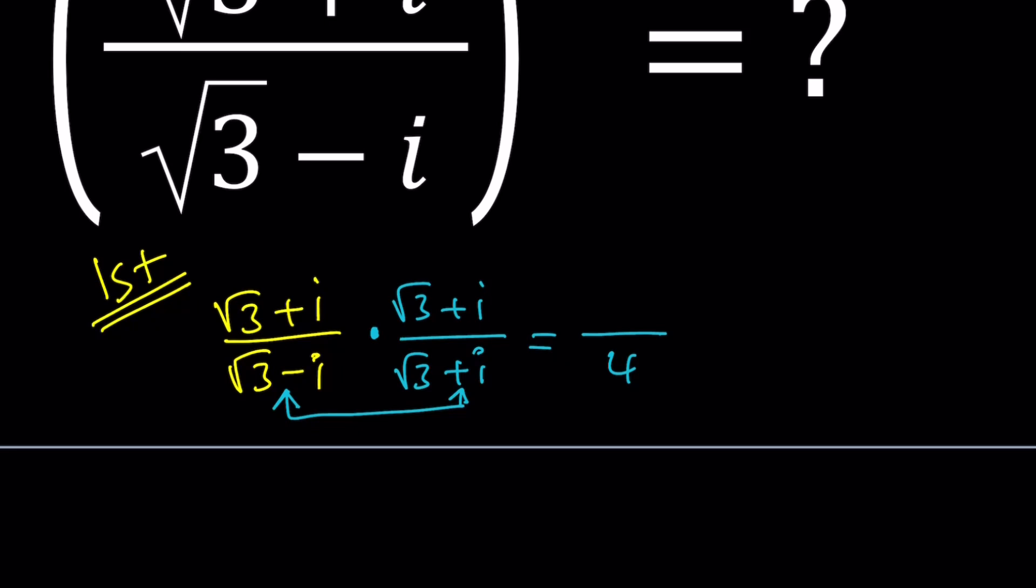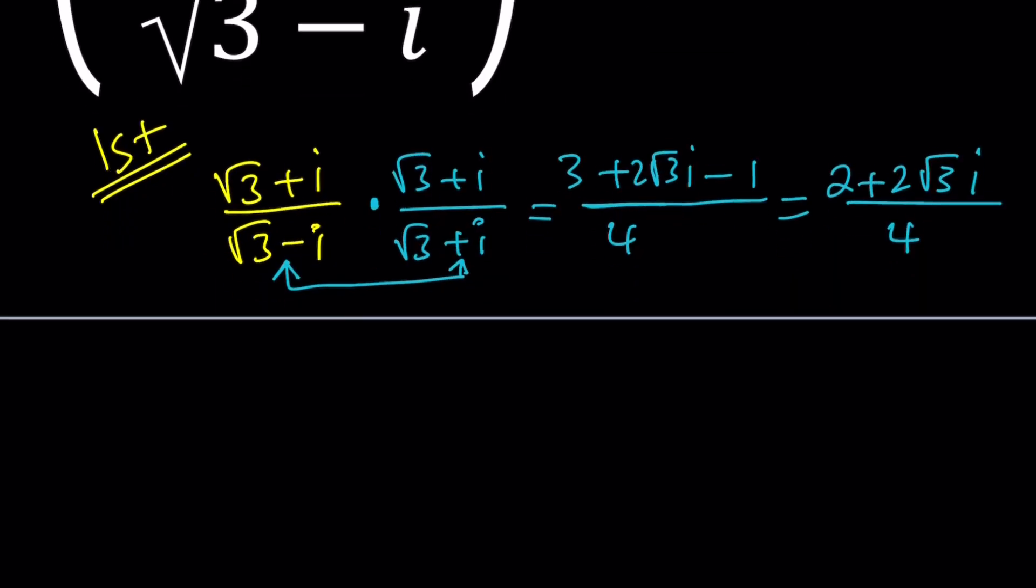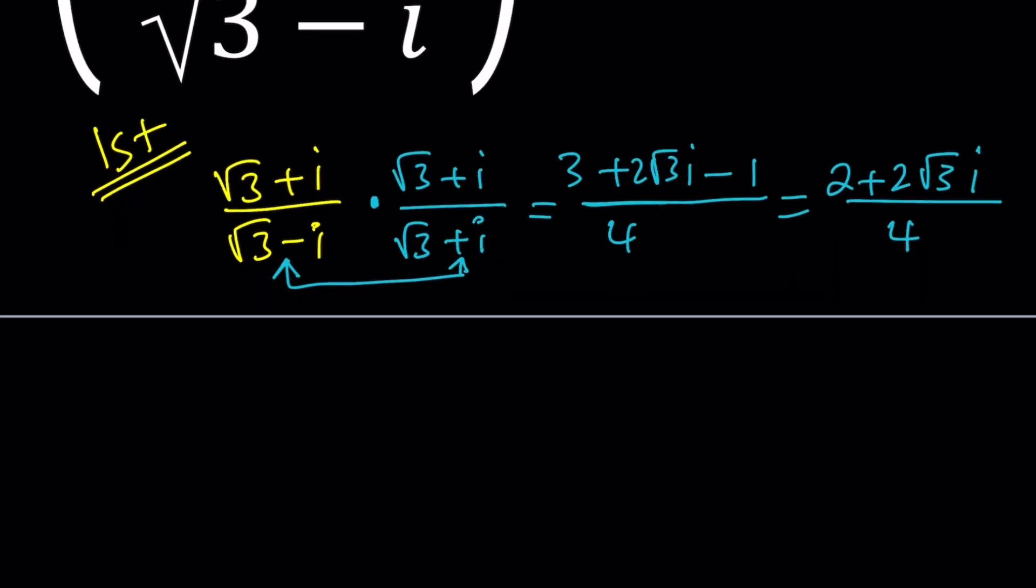And this one is actually something squared so I can square like this. Plus i squared is just going to be negative 1. 3 minus 1 is 2. And divide everything by 2. You're going to get 1 half plus root 3 over 2i. You can also write this as 1 plus root 3 all over 2 multiplied by i.